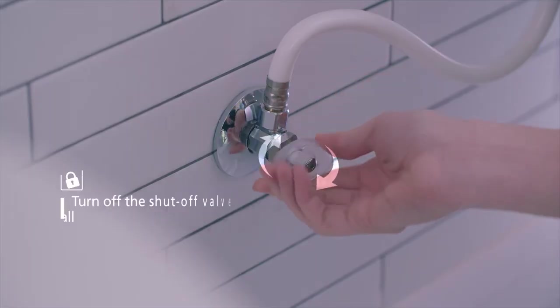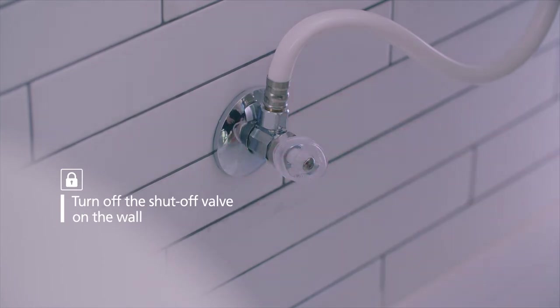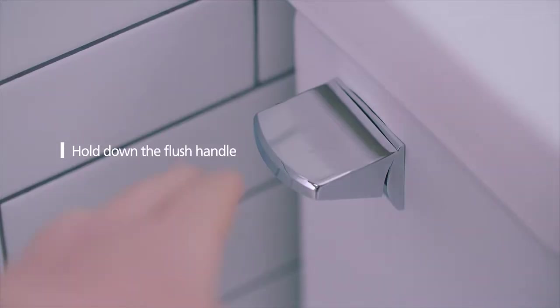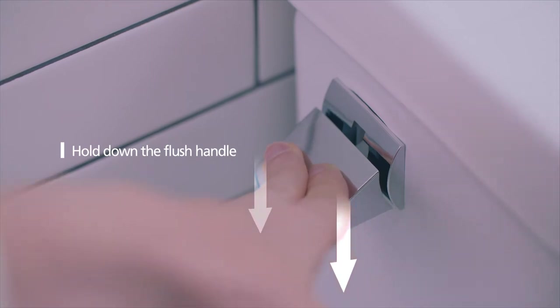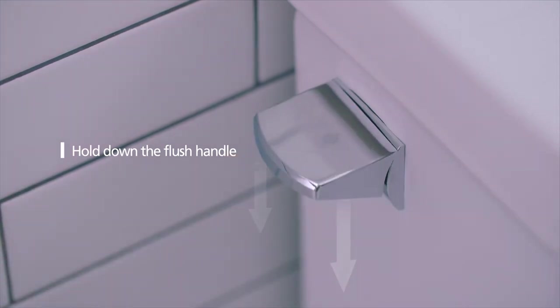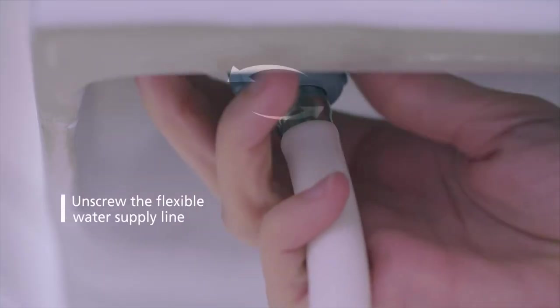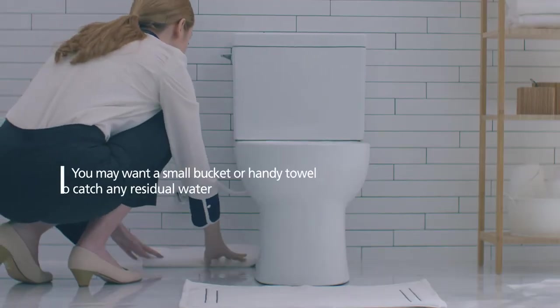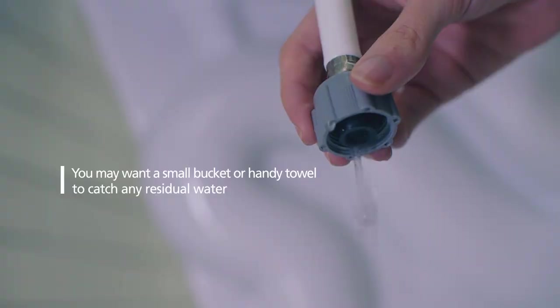Before installing the product, turn off the shutoff valve to stop the flow of water. Then, hold down the flush handle until the water is fully drained out of toilet tank. Unscrew the flexible water supply line from the fill valve at the toilet tank. You may want a small bucket or handy towel to catch any residual water.